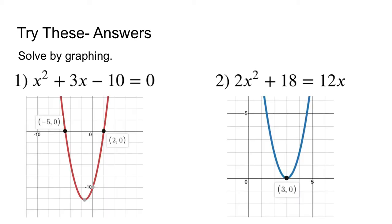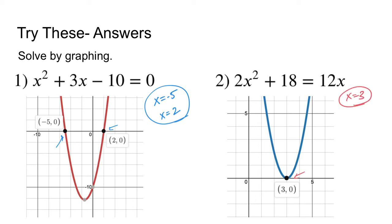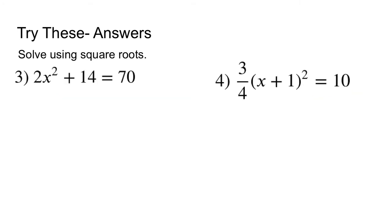If you use Desmos to graph these two equations, you should come up with these answers. For number 1, you should see the two x-intercepts at negative 5 and at 2 — so the solutions are x equals negative 5 and x equals 2. For number 2, it crosses the x-axis at 3, so the only solution is x equals 3.